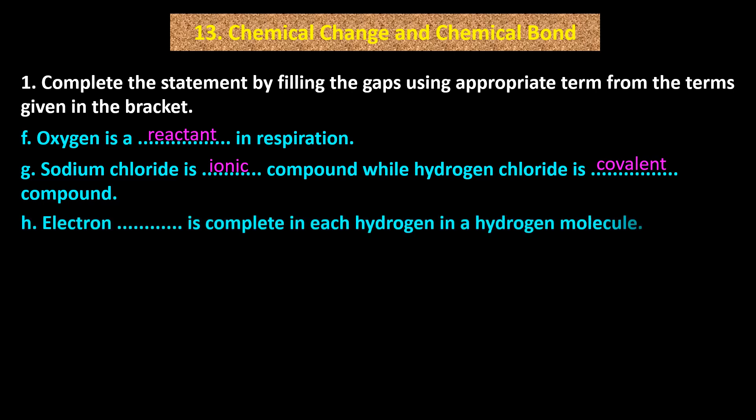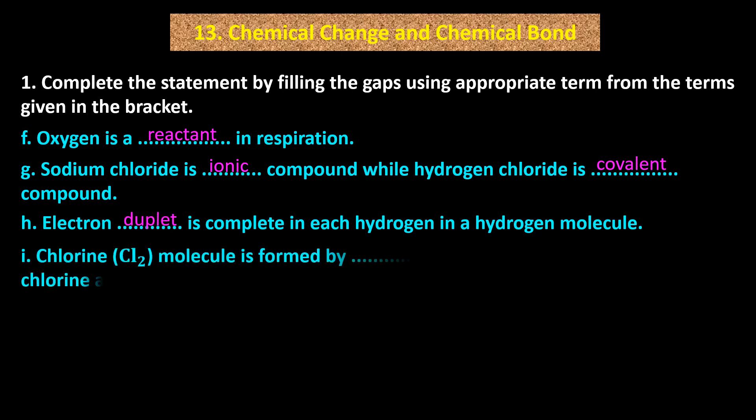Statement H: Electron blank is complete in each hydrogen in a hydrogen molecule. Answer H: Duplet. Statement I: Chlorine Cl2 molecule is formed by blank of electrons between two chlorine atoms. Answer I: Sharing.